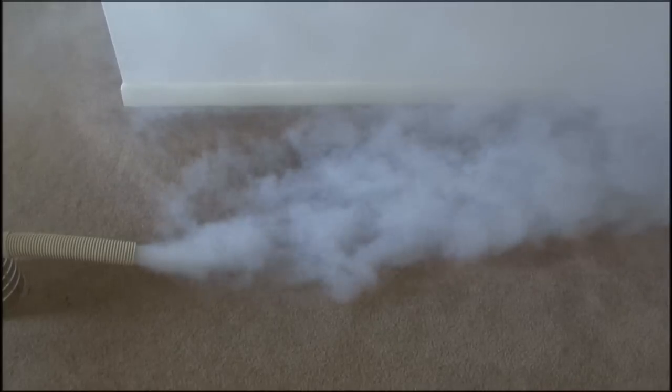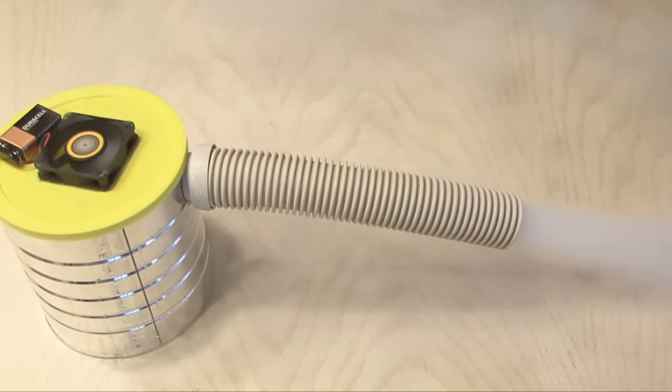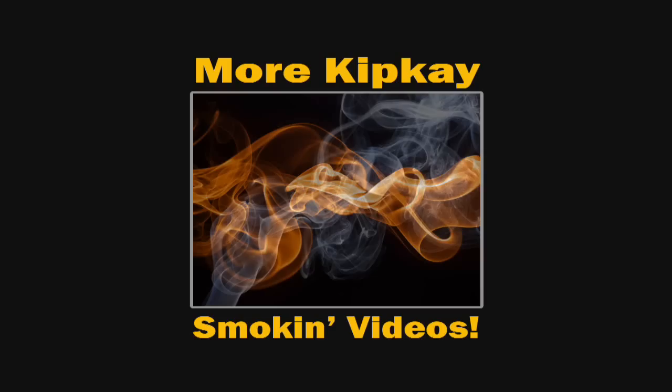This design came from my buddy Greg who built one about 25 years ago. Only he used a 50 gallon drum and a 10 pound block of dry ice. So that's how to make a mini fog maker. Tell us in the comments what you'd use it for and check out some of my other smoking videos.